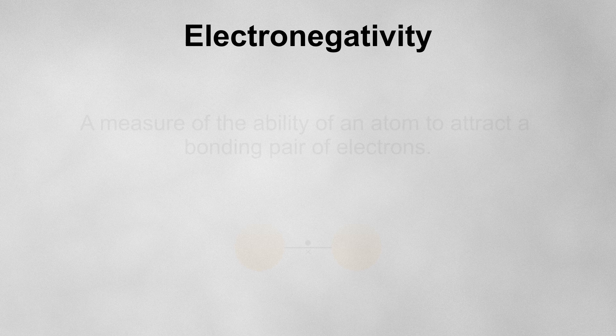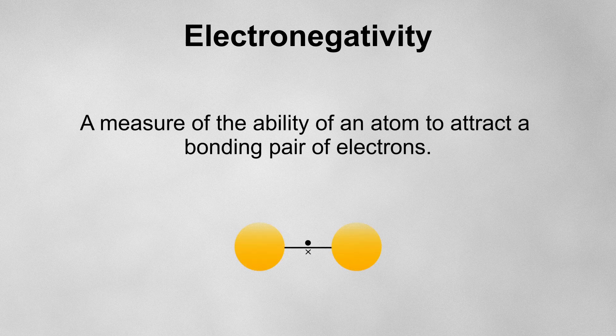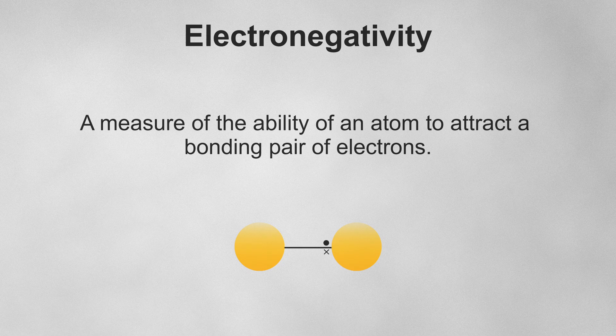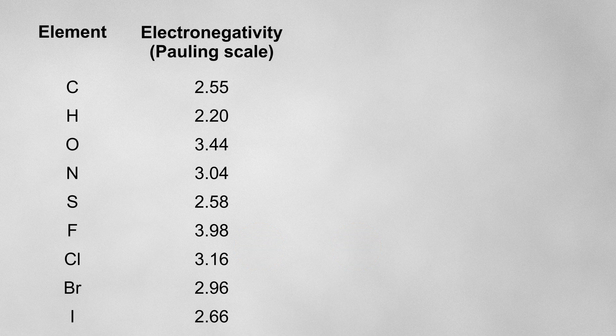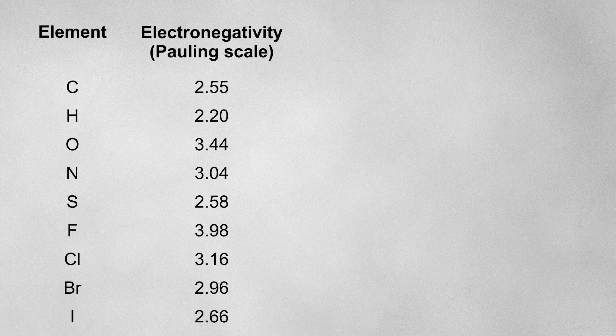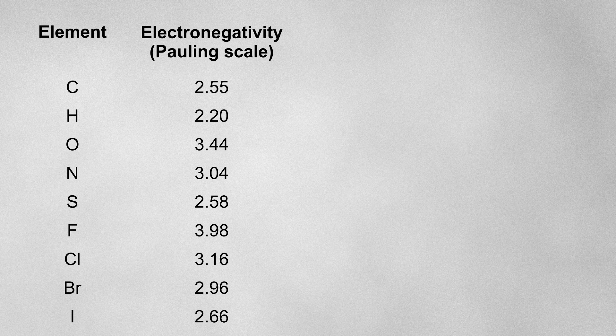Firstly, this will happen when atoms with different electronegativities are covalently bonded together. Remember, electronegativity is a measure of the ability of an atom to attract a bonding pair of electrons. Here are the electronegativity values for some elements commonly found in organic molecules. The larger the value, the more strongly that atom will pull the bonding electrons towards it.